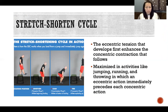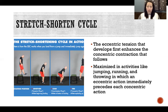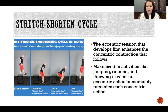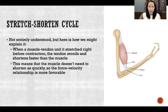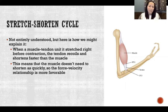We maximize and take advantage of the stretch-shorten cycle in activities like jumping, running, and throwing, where we first have an eccentric action that immediately precedes the concentric action that follows. Any time we have a wind-up before the concentric action, that is taking advantage of the stretch-shorten cycle. The field of biomechanics doesn't have a thorough understanding of why the stretch-shorten cycle happens or how it exactly works.